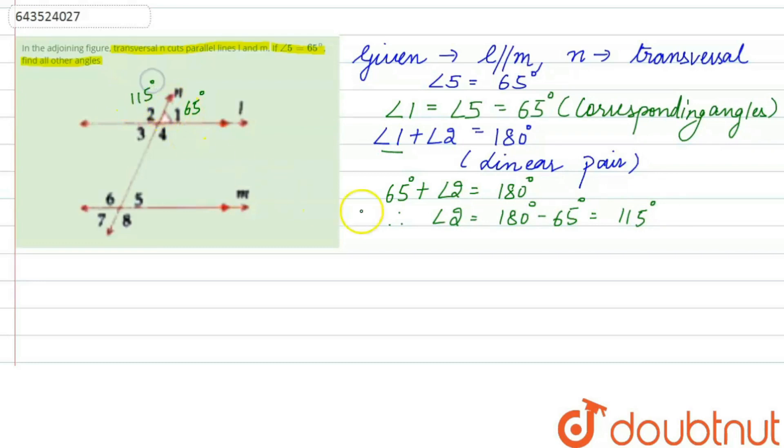Now angle 2 equals angle 4, which equals 115 degrees, because these are vertically opposite angles. Similarly, angle 3 equals angle 1, which equals 65 degrees, by vertically opposite angles.